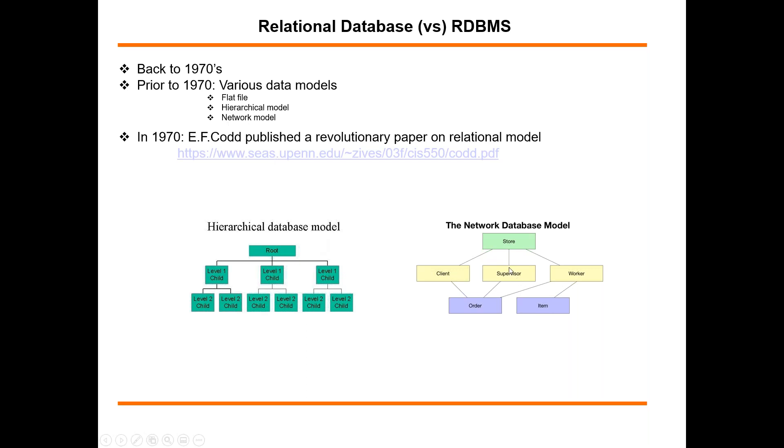But in 1970, a researcher named E.F. Codd published a revolutionary paper on a new database model called relational model. This is one of the most revolutionary papers in the database industry. Even after 40 years, the relational model is still the de facto standard for database design.